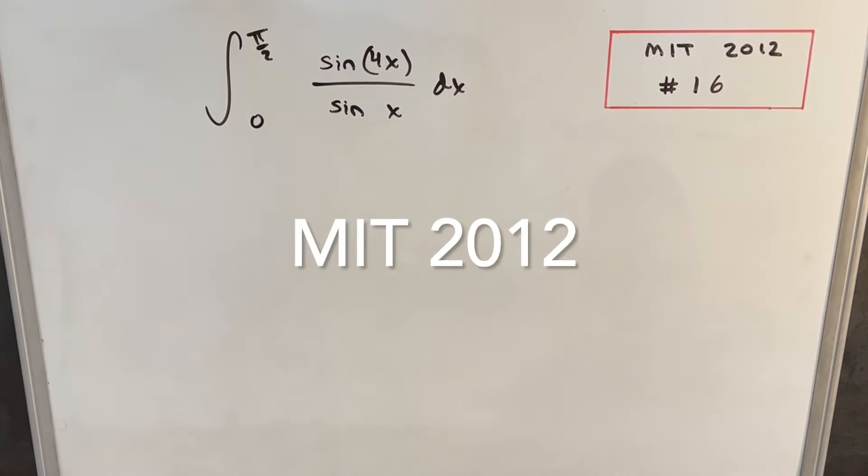Okay, today we have on the board another integral from MIT 2012. This is problem 16. We have the integral from 0 to pi over 2 of sine to the 4x over sine x dx.